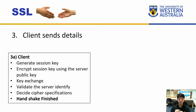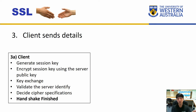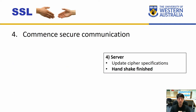Once the client confirms the server's identity and has sent all the information needed, the handshake finishes for the client. At this point the client starts encrypting its messages using the generated shared secret key. From the server side, it updates the cipher specification using the received pre-master session key, generates the shared secret key, and once data starts coming from the client it can decrypt.